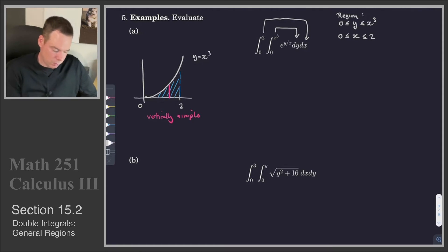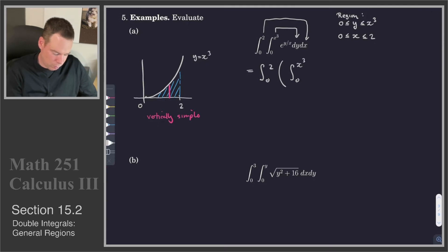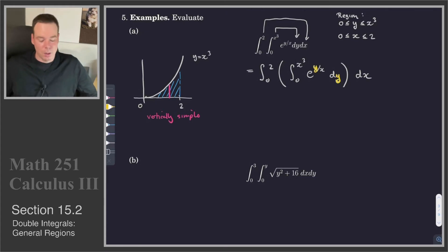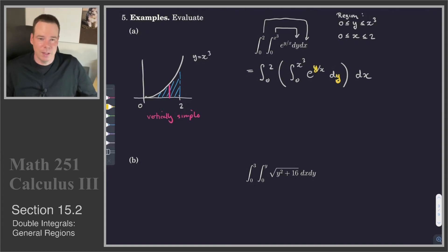We compute the inner integral first: the integral from 0 to x cubed of e to the y over x, dy. The variable of integration is y, so we treat x as a constant. We find the antiderivative, evaluate at the endpoints — plugging x cubed and 0 in for y — and get an expression involving x alone, which we then integrate in the next step.